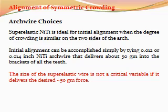Alignment of symmetric crowding — arch wire choice. Super-elastic NiTi is ideal for initial alignment when the degree of crowding is similar on both sides of the arch. Initial alignment can be accomplished by tying a 0.014 or 0.016-inch NiTi arch wire that delivers about 50 grams into the brackets. The size of super-elastic wire is not a critical variable if it delivers the desired 50-gram force.